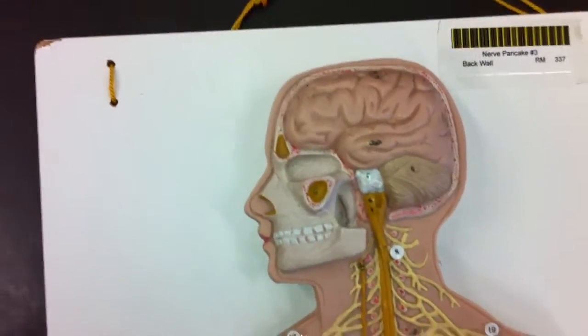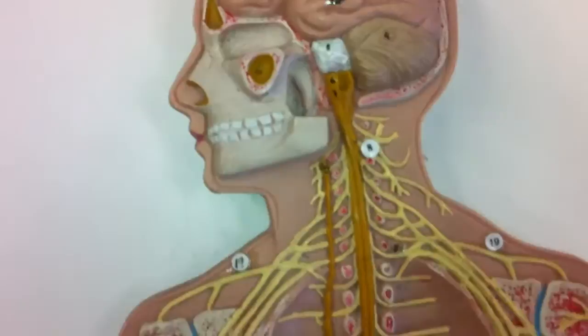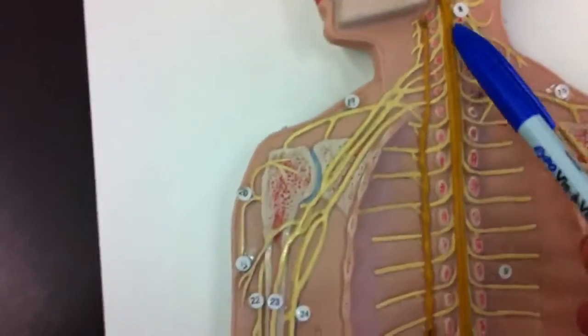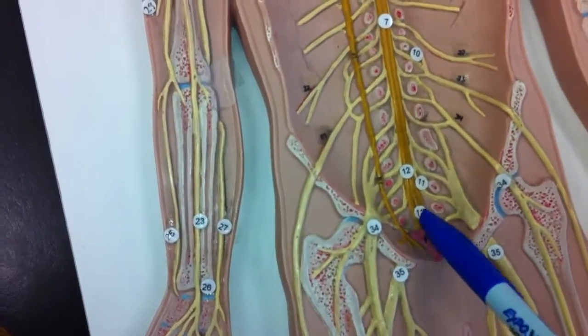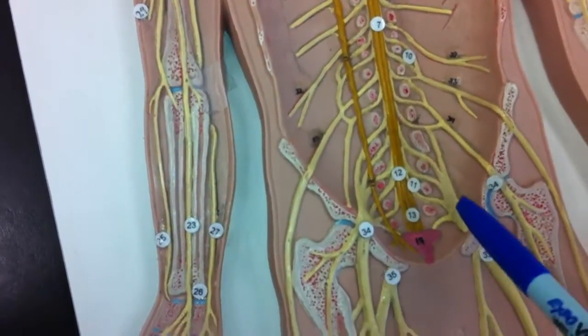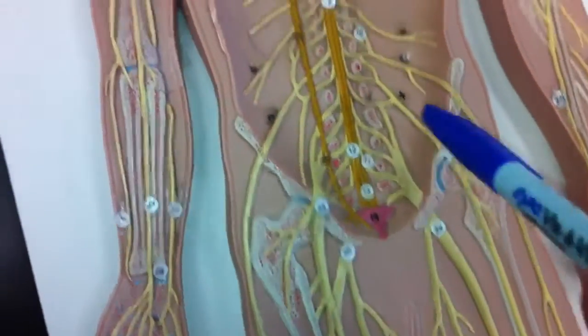Okay, so we're doing the nerve pancake man. We have the spinal cord, which goes all the way down and ends at L2, at which point it becomes the cauda equina, which goes down from there.